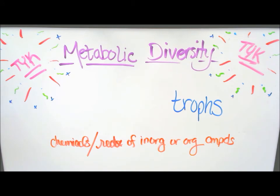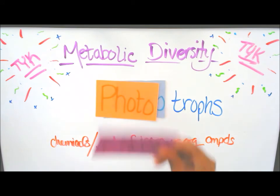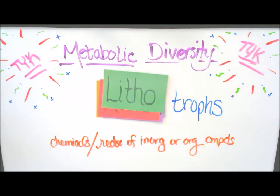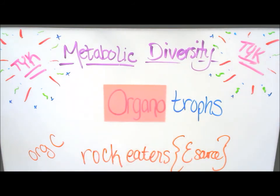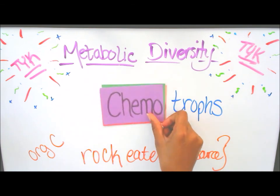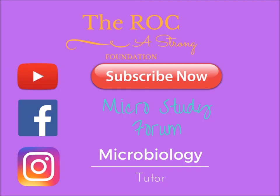Our fourth trope has an energy source of chemicals — redox reactions of inorganic or organic compounds occur. So we have heterotropes, phototropes, chemotropes, autotropes, lithotropes, or organotropes. Our fifth trope is a rock eater, its energy source is inorganic compounds. So we have organotropes, lithotropes, autotropes, chemotropes, phototropes, or heterotropes.